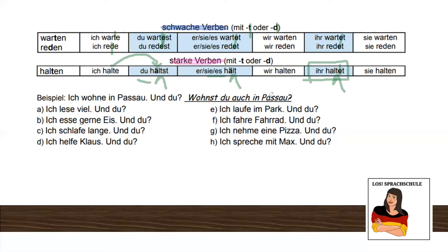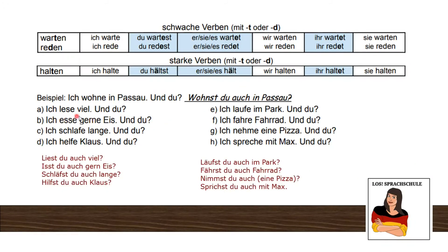Now a small exercise: 'Ich wohne in Passau — und du, wohnst du auch in Passau?' I live in Passau, and you — do you also live in Passau? Try to finish the exercise and we will compare in a second. 'Ich lese viel — und du, liest du auch viel?' I read a lot, and you — do you also read a lot?